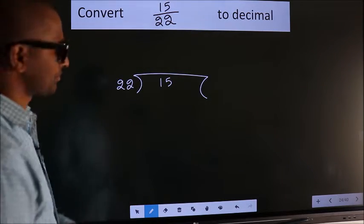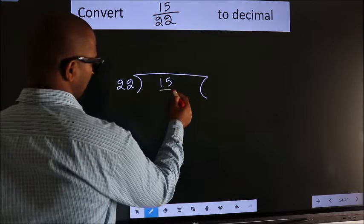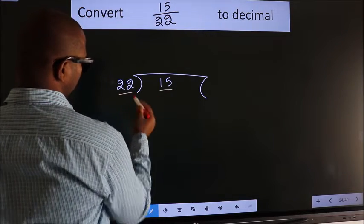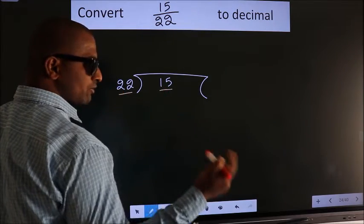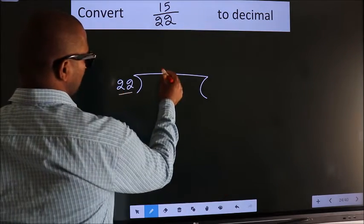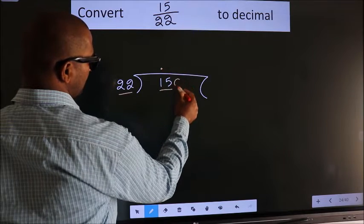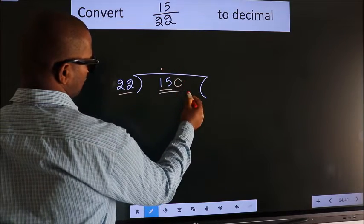Next. Here we have 15, here 22. 15 is smaller than 22, so what we do is we put dot and take 0 here. So, 150.